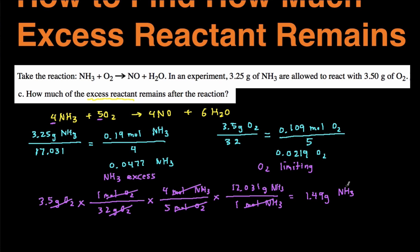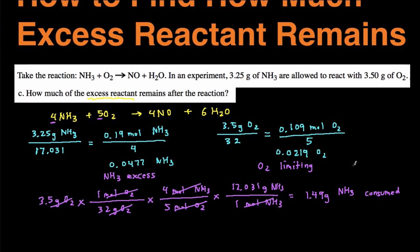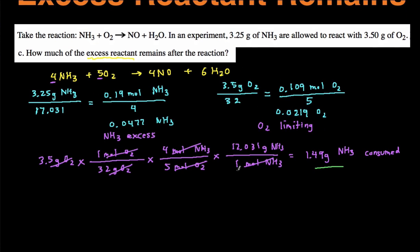This number is the amount of NH3 that is consumed when it reacted with 3.5 grams of O2. So this is the amount of NH3 consumed. That means to find the amount of NH3 that's left over, we're going to take the original amount of NH3, which is 3.25 grams, and then we're going to subtract it by the amount that was consumed, which is 1.49 grams, and that's going to leave us with 1.759 grams of NH3 in excess. That's how much is left over.